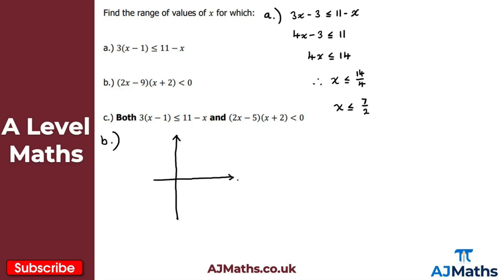Drawing the axes: the quadratic has roots at x = -2 and x = 9/2. It cuts through the y-axis at -2 × 9/2 = -18. Joining these points gives us our u-shaped quadratic sketch.